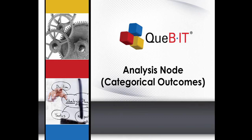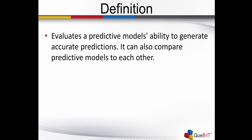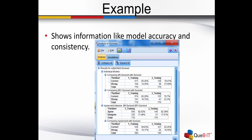Let's talk about the analysis node, and specifically how to use it when you have categorical outcomes. The analysis node is located in the output palette. This node allows you to evaluate a model's predictions so you can see how accurate those predictions are, and also compare predictive models to each other. The analysis node will show you information like model accuracy and consistency.